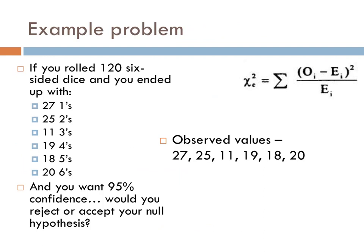First, let us define our observed values. Observed values are the numbers that you actually collect while you're running your experiment. In this circumstance, there were 27 ones, 23 twos, 11 threes, 19 fours, 18 fives, and 20 sixes. Your observed values would therefore be 27, 23, 11, 19, 18, and 20.